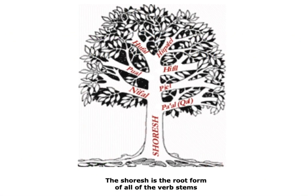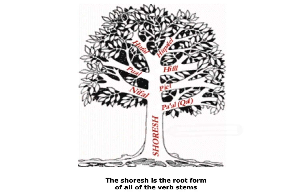To conclude, here's a quick reminder and summary. You can see the tree here. The root — which is the trunk of the tree in this picture — is the Shoresh. The Shoresh gives us the branches. You can see the seven branches, which are the templates, the Binyanim: Nif'al, Pu'al, Huf'al, Hitpa'el, Hif'il, Pi'el, and Pa'al. The root gives us the templates. Not every Shoresh can be fit into all of the templates.